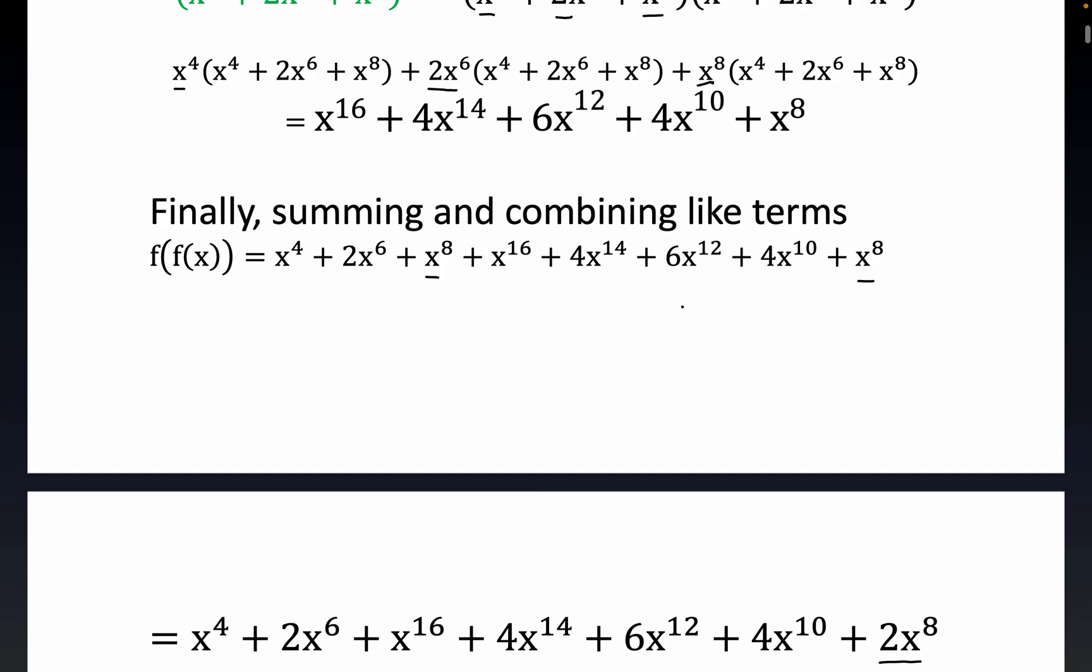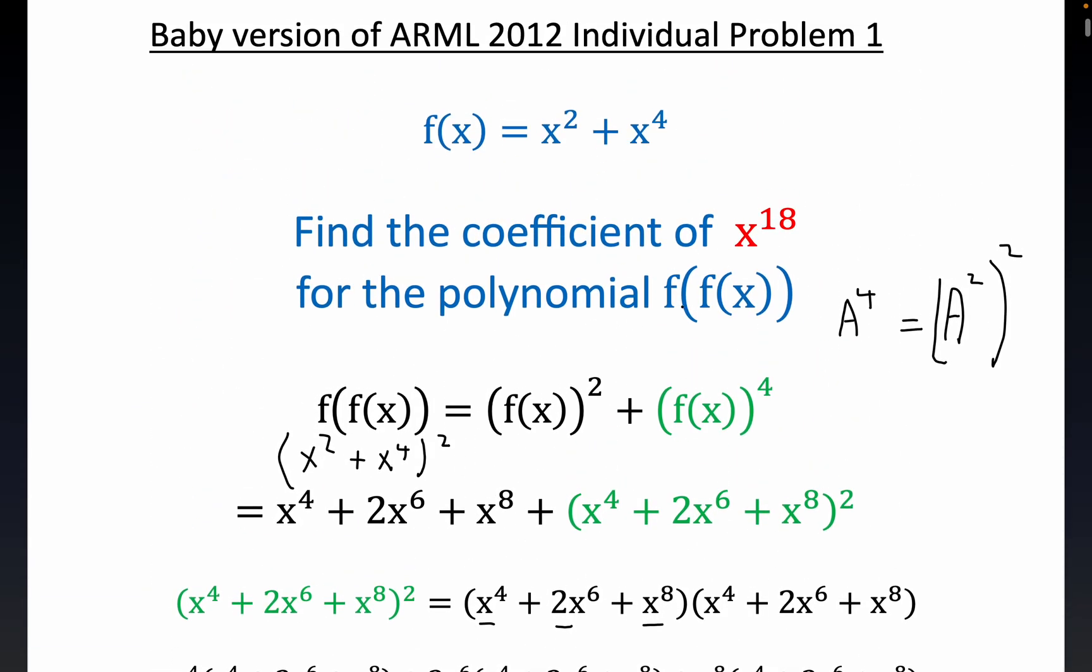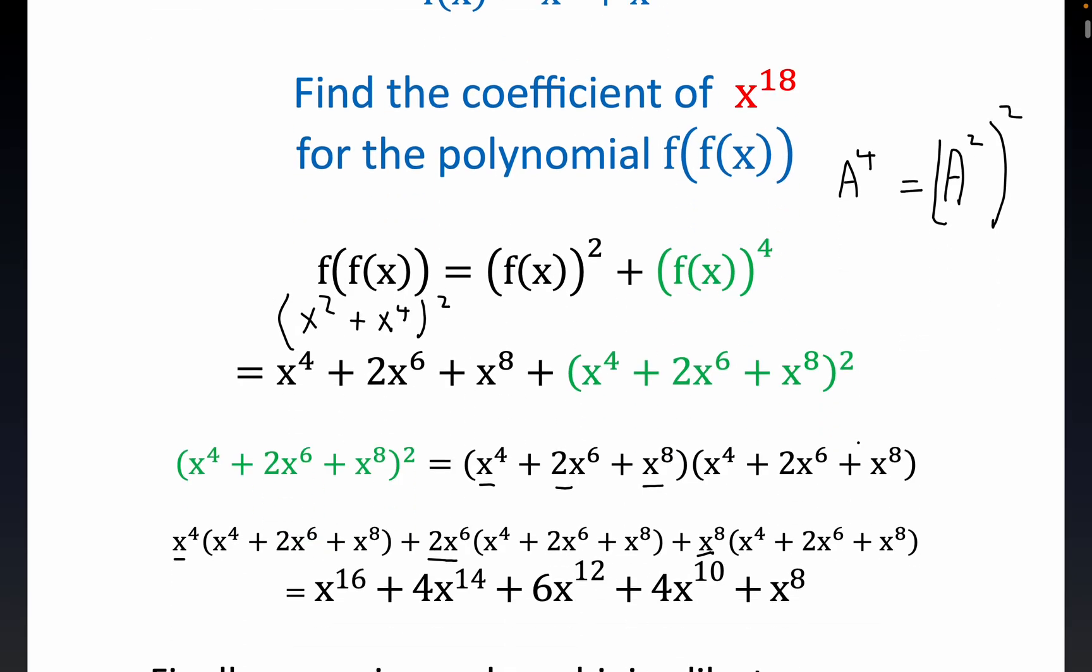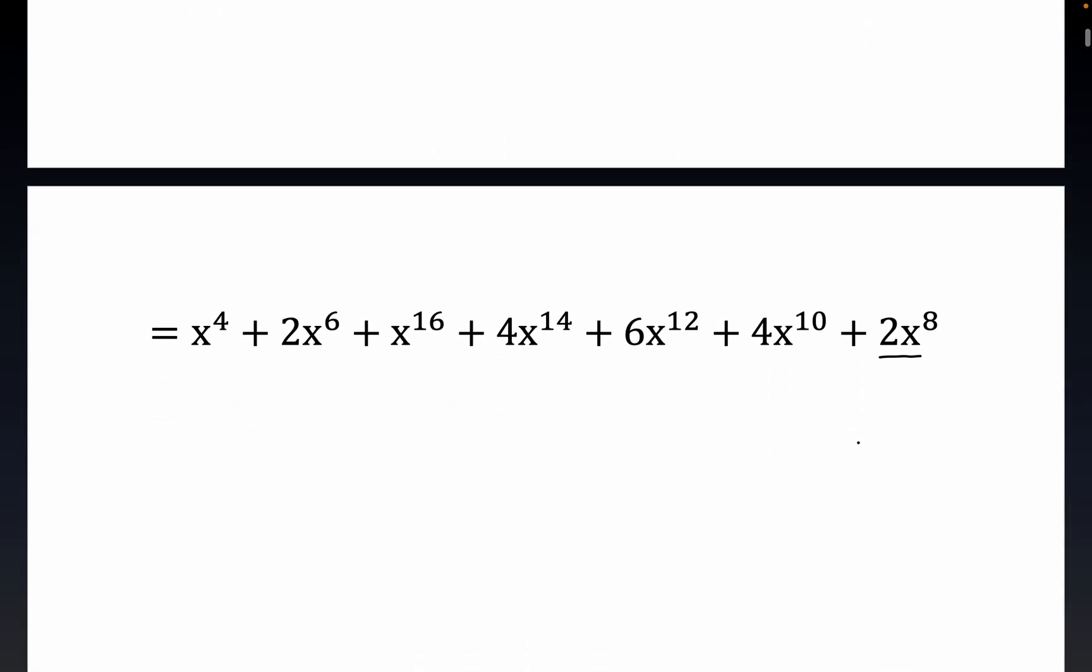But lo and behold, folks, what were we supposed to find? We're supposed to find the coefficient of x to the 18th. Oh, no. So I got to cheat on you. I don't see an x to the 18th in here anywhere. But we can do this. 0 times x to the 18th.